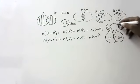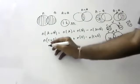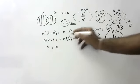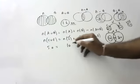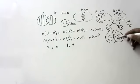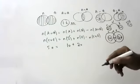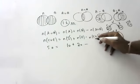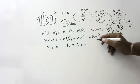Totally, how many people are there? Total of cricket is 20. Total of football is 30. And coming to intersection, how many are there? 10.